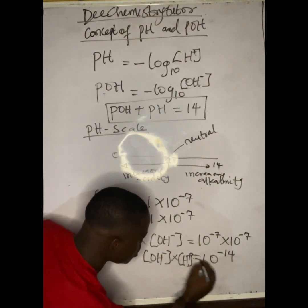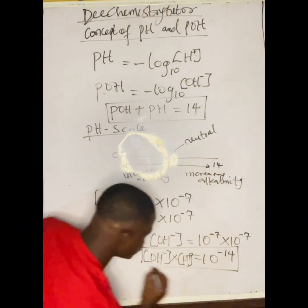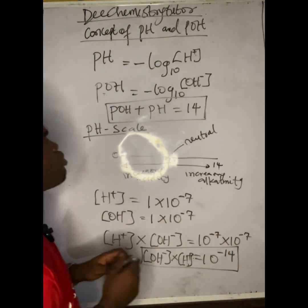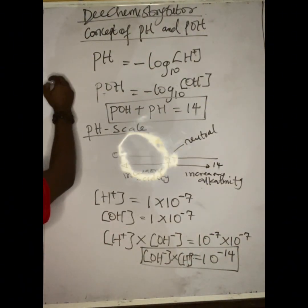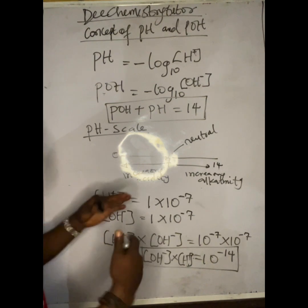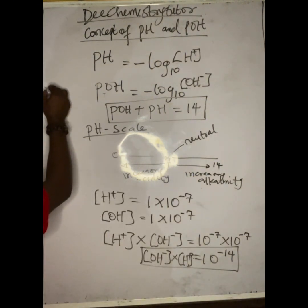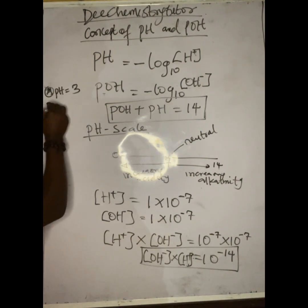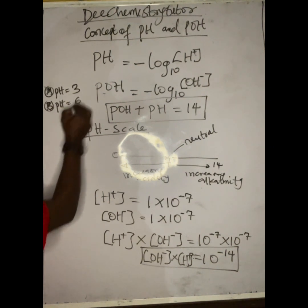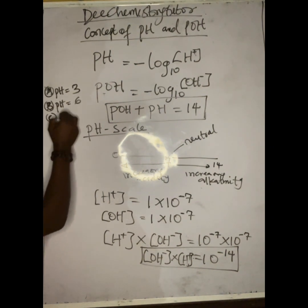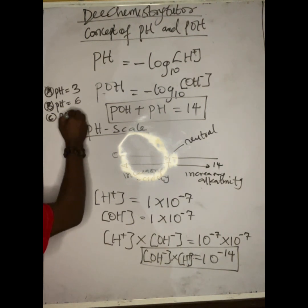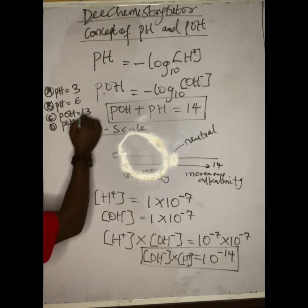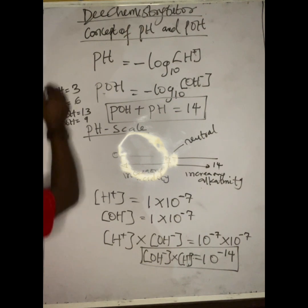Now let me give you a question where people make mistakes. Which of the following solutions is highly acidic? Option A: a solution with a pH of 3. Option B: a solution with a pH of 6. Option C: a solution with a pOH of 13. Option D: a solution with a pOH of 9.